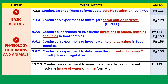Two more experiments under the theme of Basic Biology: conduct an experiment to investigate aerobic respiration — this is a bit more complicated and may not be done in the lab in a short period unless modified. Learning standard 7.3.4 is to conduct an experiment to investigate fermentation in yeast, which can be done in the lab. We need to know the process of alcohol fermentation in yeast — remember the acronym: glucose breaks down to form carbon dioxide, ethanol, and energy.